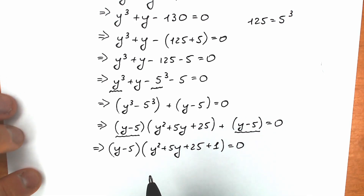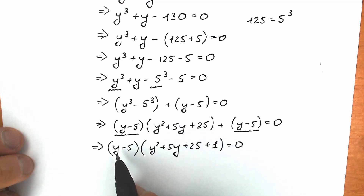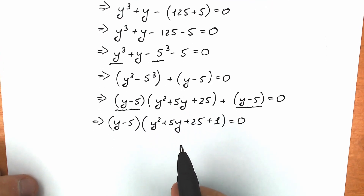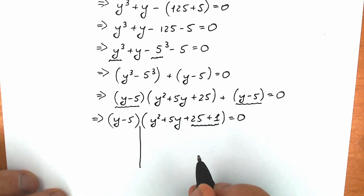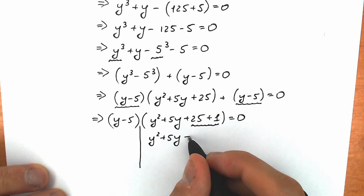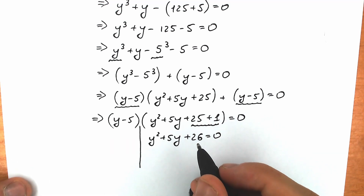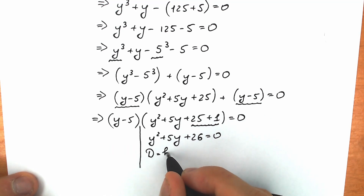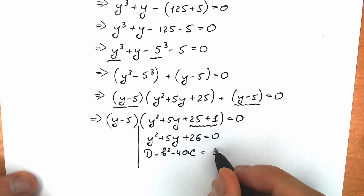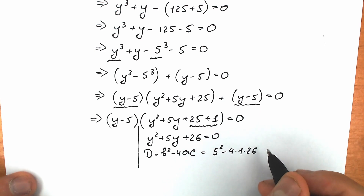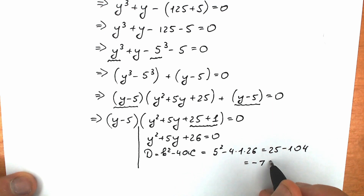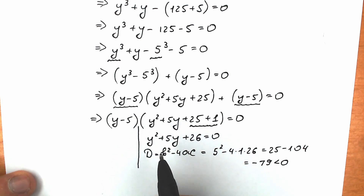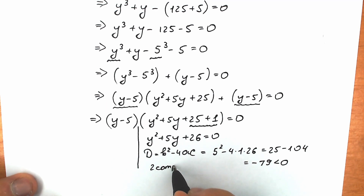A product of two factors equals zero when either factor equals zero. For the quadratic y squared plus 5y plus 26 equals 0, let's find the discriminant: D = b squared minus 4ac = 5 squared minus 4 times 1 times 26 = 25 minus 104 = negative 79, which is negative. So this quadratic gives us two complex roots.